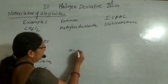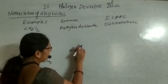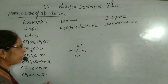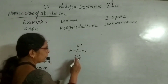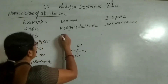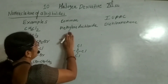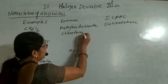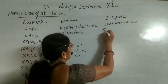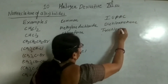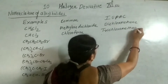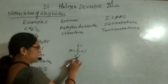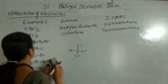The next example is chloroform. In chloroform, 3 of the 4 hydrogens of methane are replaced by 3 chlorines. It is a haloform — chloroform, bromoform, iodoform. Its common name is chloroform. Its IUPAC name: since it has 3 chlorines, it is trichloromethane. So 3 hydrogens of methane are replaced by 3 chlorines, giving trichloromethane.